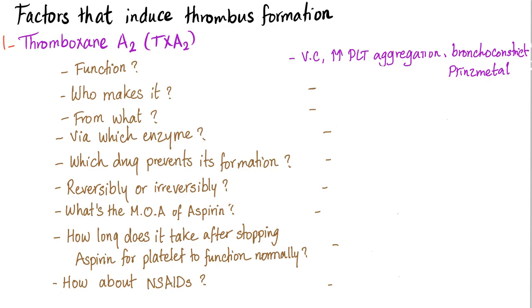Who makes it? The answer is platelets. From what? From prostaglandin H2 or from the cell membrane of the platelet, the lipid bilayer. What's the enzyme? The answer is thromboxane synthase.